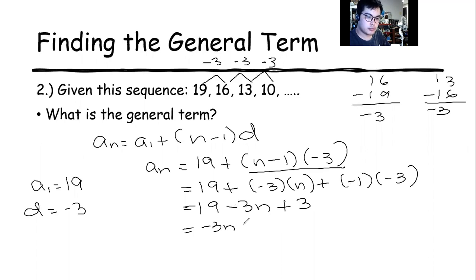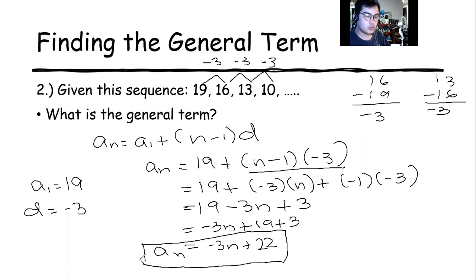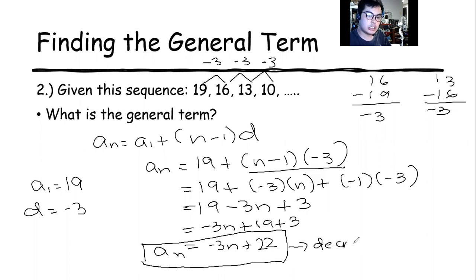We're going to arrange the terms and add the numbers. Our general term is negative 3n plus 22. Since the coefficient of n is negative — or the common difference is negative — we can say that this is decreasing. It is just like linear equations or linear functions: if the slope is negative, the graph will go down. So this sequence represents a falling graph.